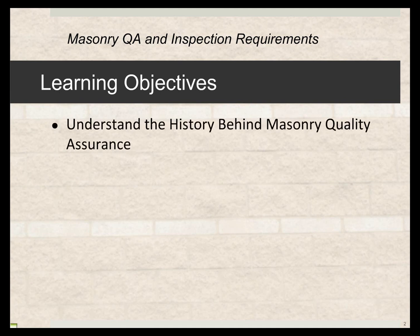First, let's go over some learning objectives. We want to understand the history behind masonry quality assurance, because it's not new — it's been around for many, many years. I'll take you back to the genesis, to the beginning, and cover how much difficulty there was over the first 55 years in understanding what quality assurance is, and how much progress we've made over the last 10 or 15 years in clarifying it and making it easier to implement properly in the field.